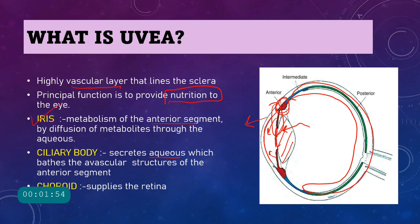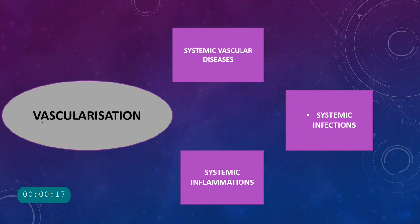The third part of the uvea is the choroid, which is present posteriorly and is responsible for supplying nutrition to the retina — particularly the outer layers of the retina. The high vascularity of the uvea is also disadvantageous because it gets involved in many systemic problems.